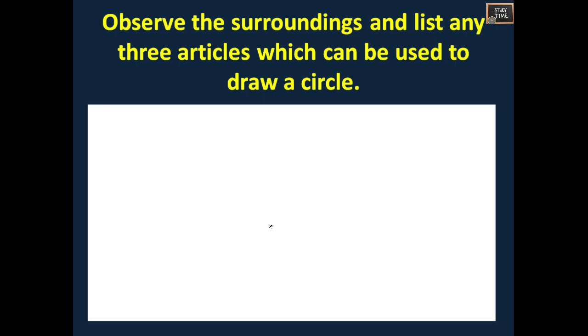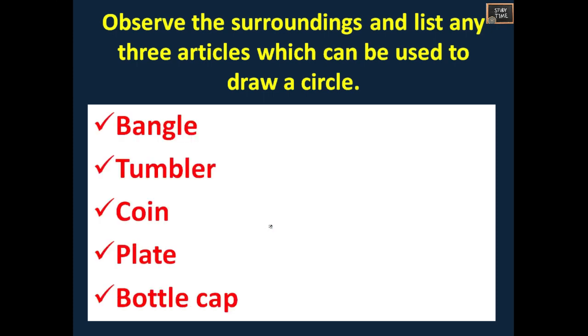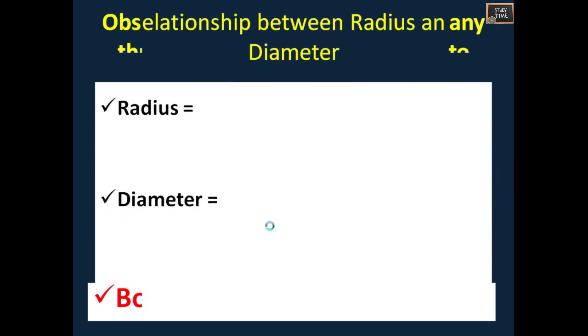Observe the surroundings and list any three articles which can be used to draw a circle. Now here I have mentioned bangle, tumbler, coin, plate, bottle cap. These are the things which you can make a circle out of. You can draw any other object if you like.